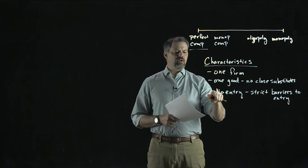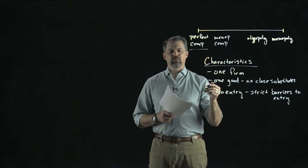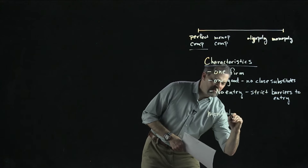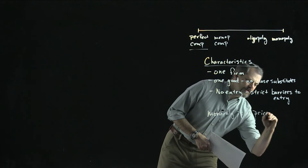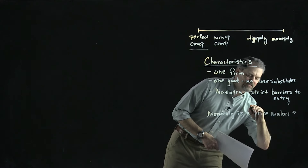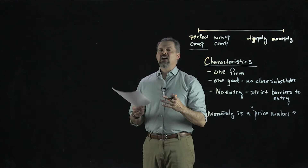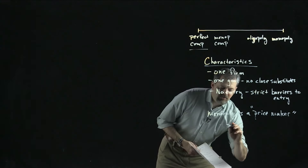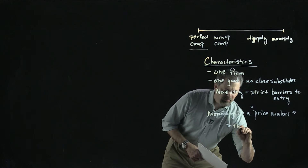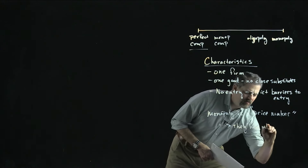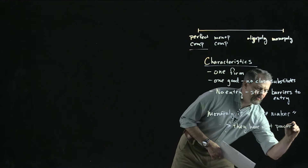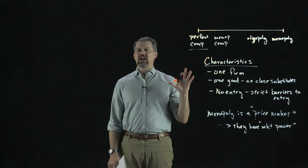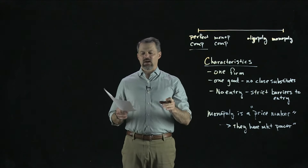Because there's one firm and strict barriers to entry, we say the monopoly is a price maker—they get to choose their price. They have market power. That phrase market power essentially means some control over the price. The monopoly is going to have as much market power as it is possible to have.